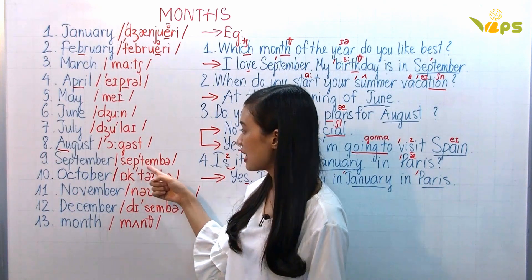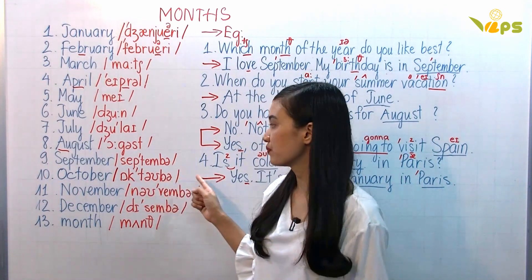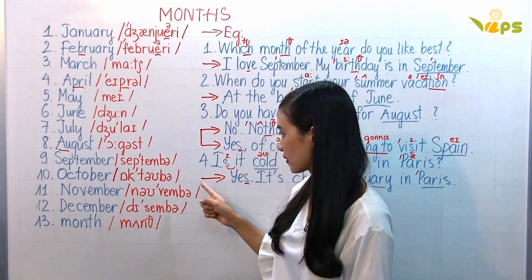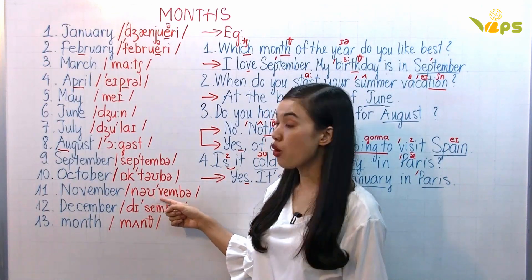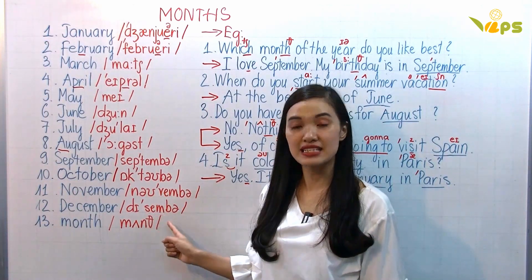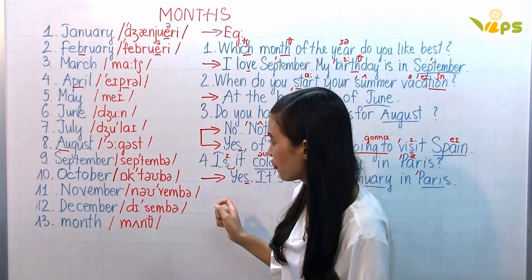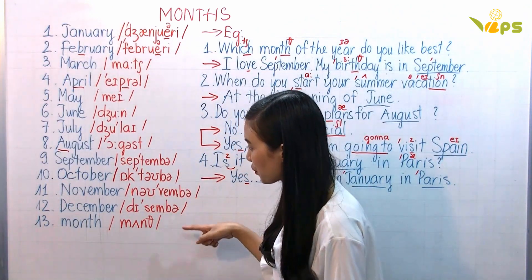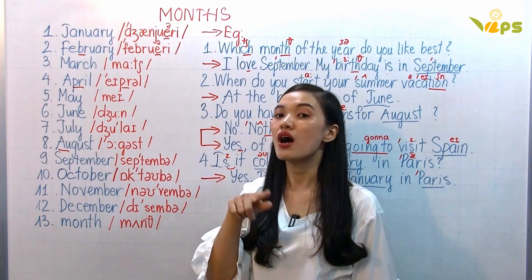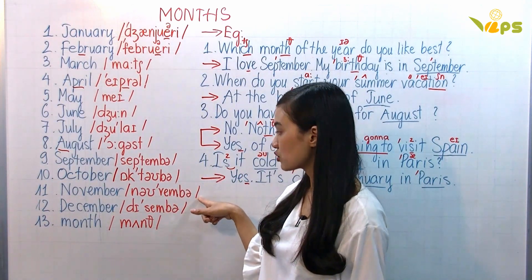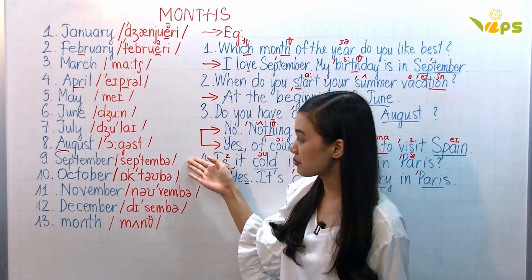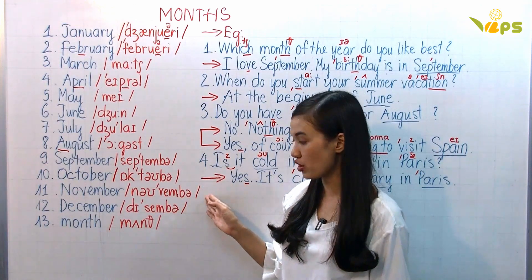September. October. November. December. Remember from September to December, we stress the second syllable: September, October, November, December.